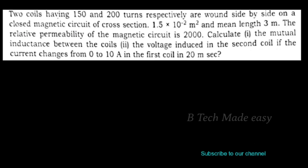Next problem: 2 coils having 150 and 200 turns respectively are wound side by side on a closed magnetic circuit. The cross-section is 1.5 × 10⁻² meters square and a mean length of 3 meters. The relative permeability of the magnetic circuit is 2000.